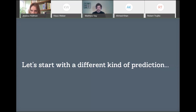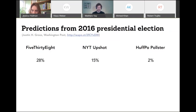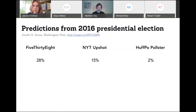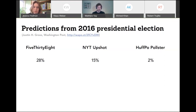I'm going to start with a different kind of predictive model that we actually know the outcome of. Here are the probabilistic predictions of Trump's chance of winning the 2016 presidential election from three different poll aggregators. 538 gave him about a 28% chance, the New York Times 15%, and HuffPost close to 2%. The interesting thing is that even years later, people still complain about the quality of 538's prediction here. But one way to judge the quality of that prediction is: over time, over all the predictions that 538 makes, when they say something has a third of a chance of happening, does it happen a third of the time? If they say it has a third of a chance, we shouldn't actually be too surprised if Trump wins.